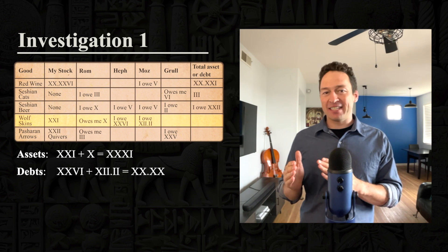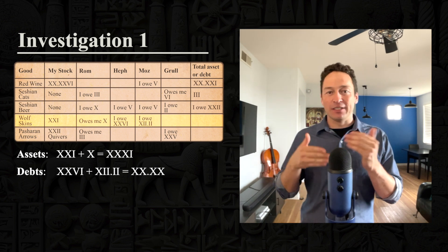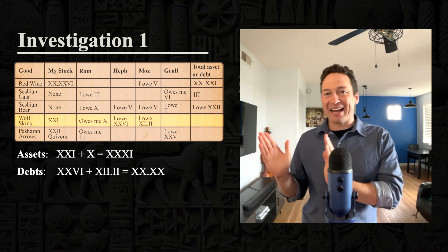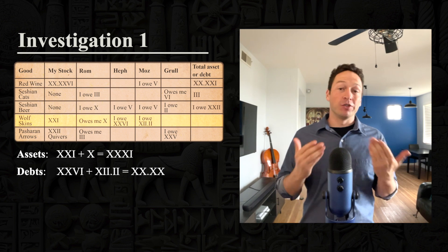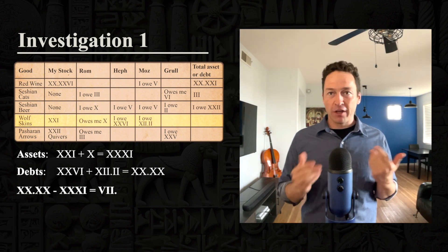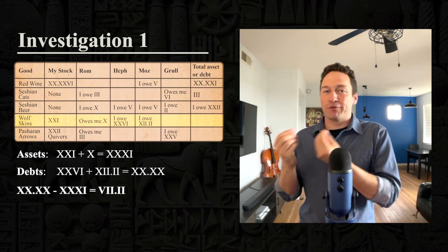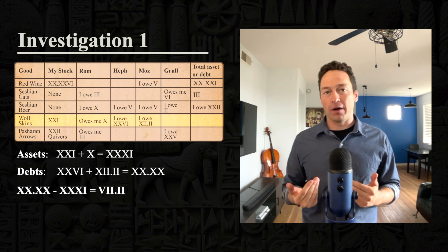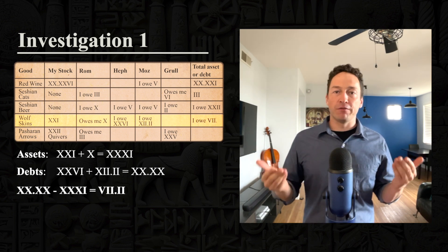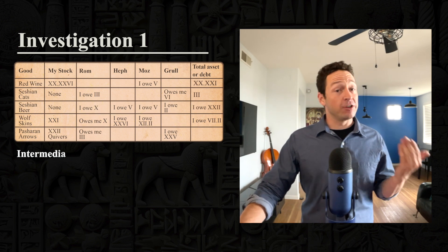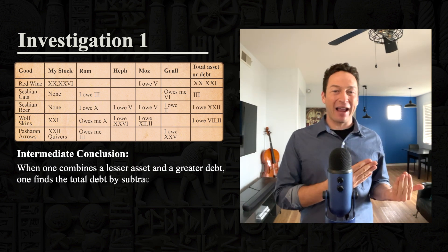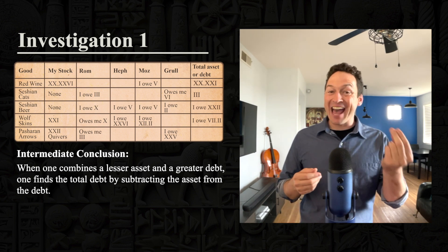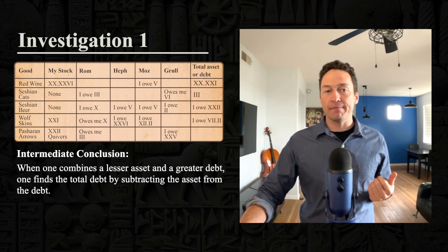Just as debt cancels an asset, Ark actually realizes that assets cancel debts. He can think of debts as being the primary and just thinks of subtracting the assets from the debts. As a result, he does four, ten minus three, ten and one. He's subtracting the assets from the debts and he sees that he has a total debt of five and four. This allows Ark to come to an intermediate conclusion. When one combines a lesser asset and a greater debt, one finds the total debt by subtracting the asset from the debt.